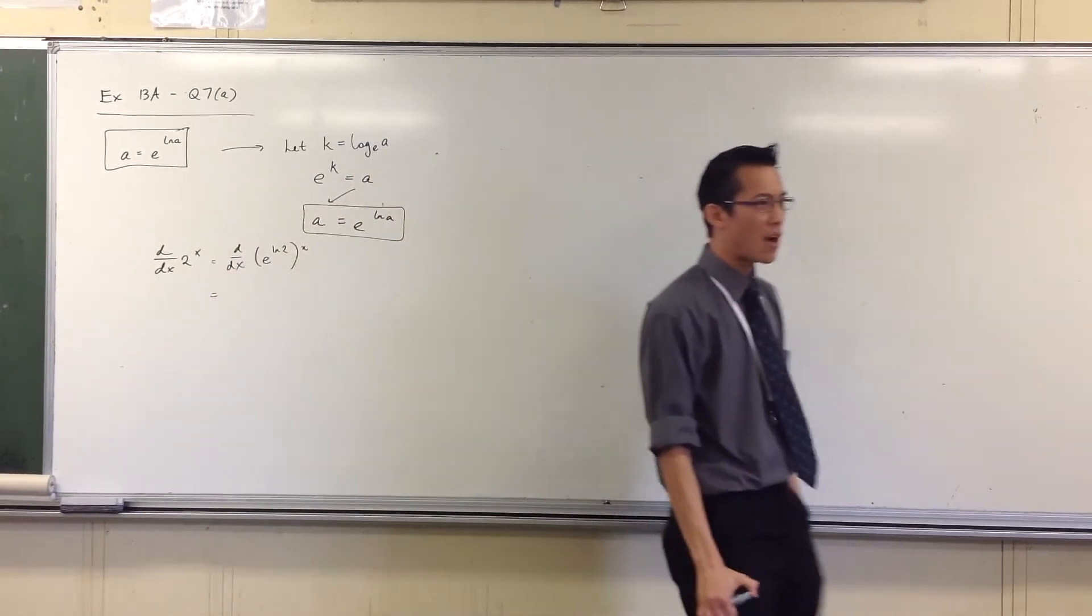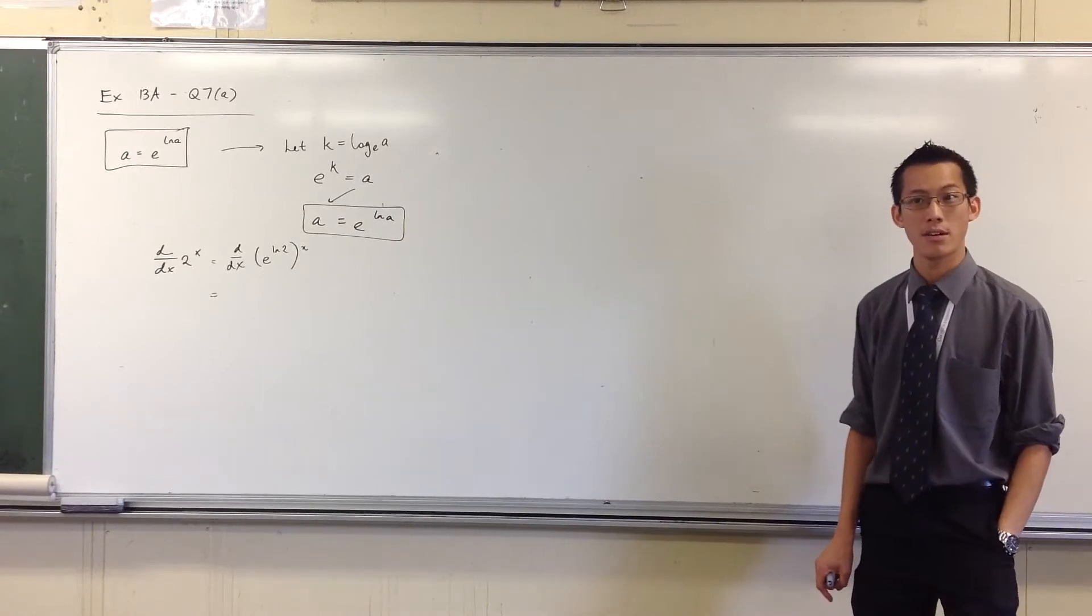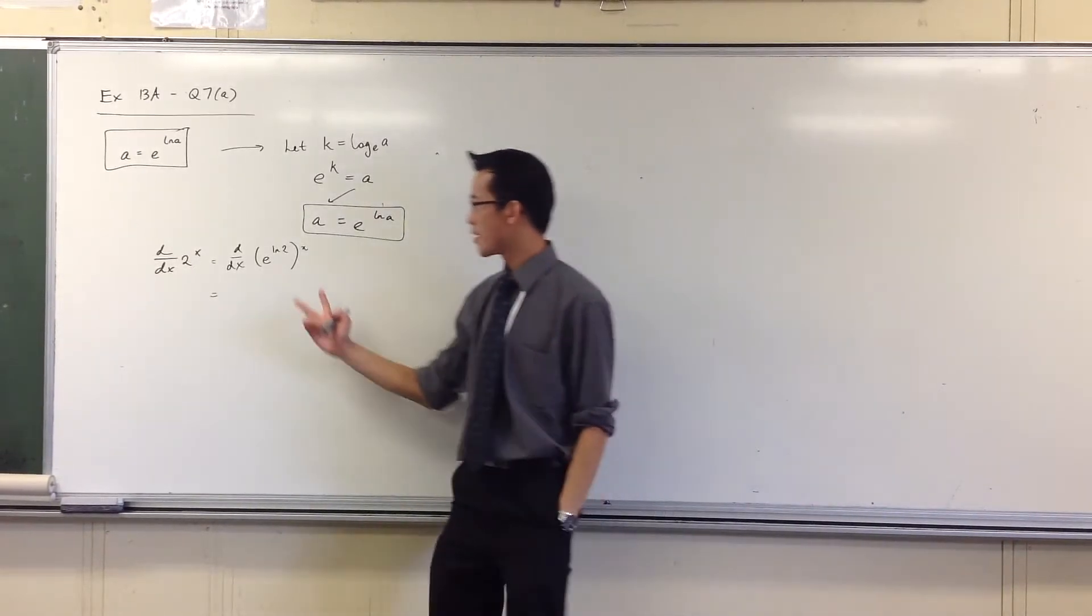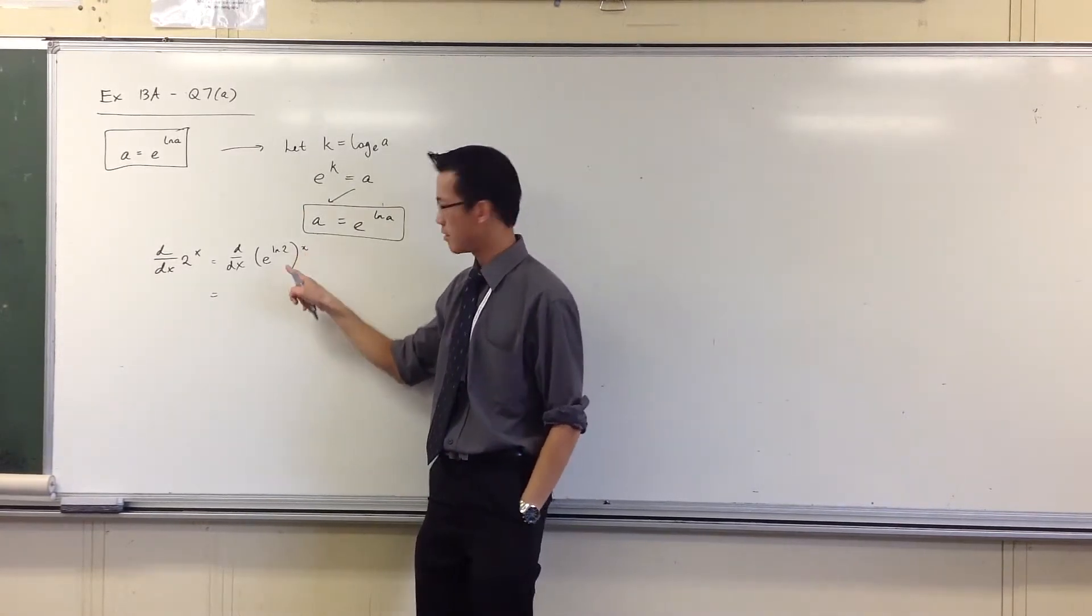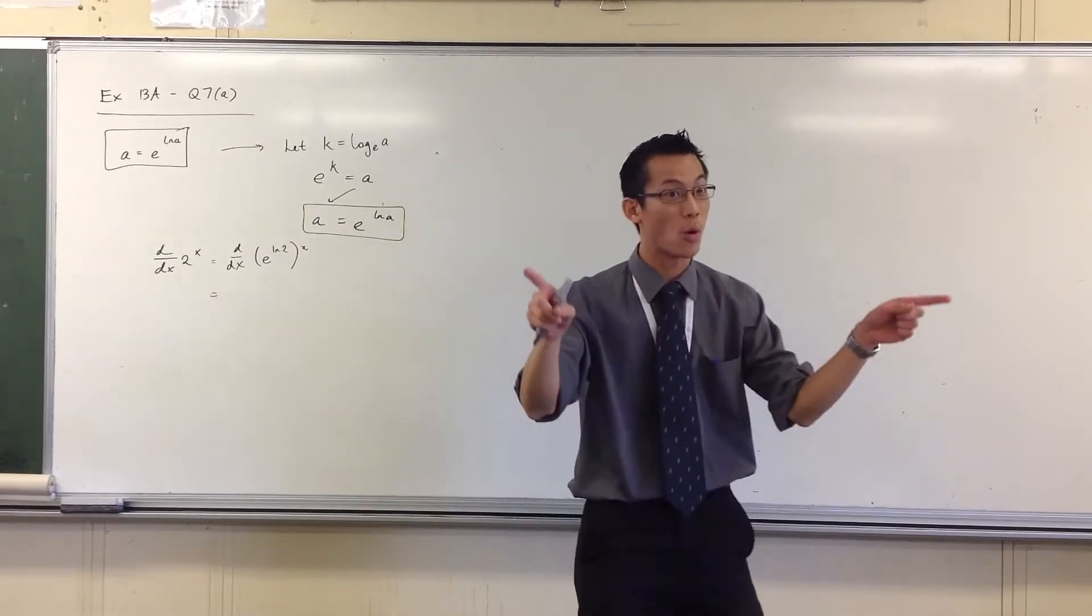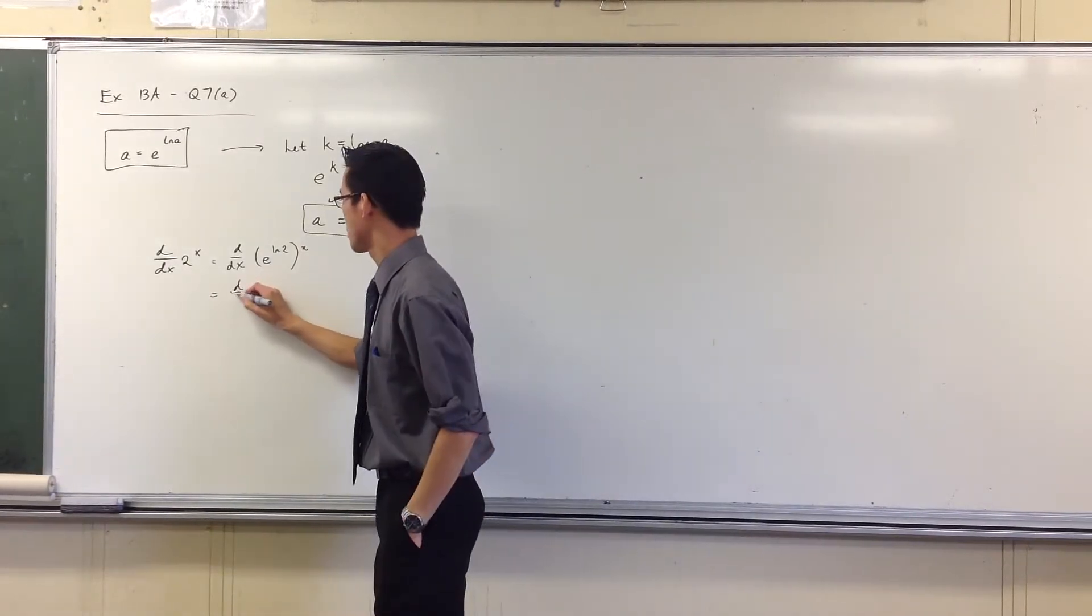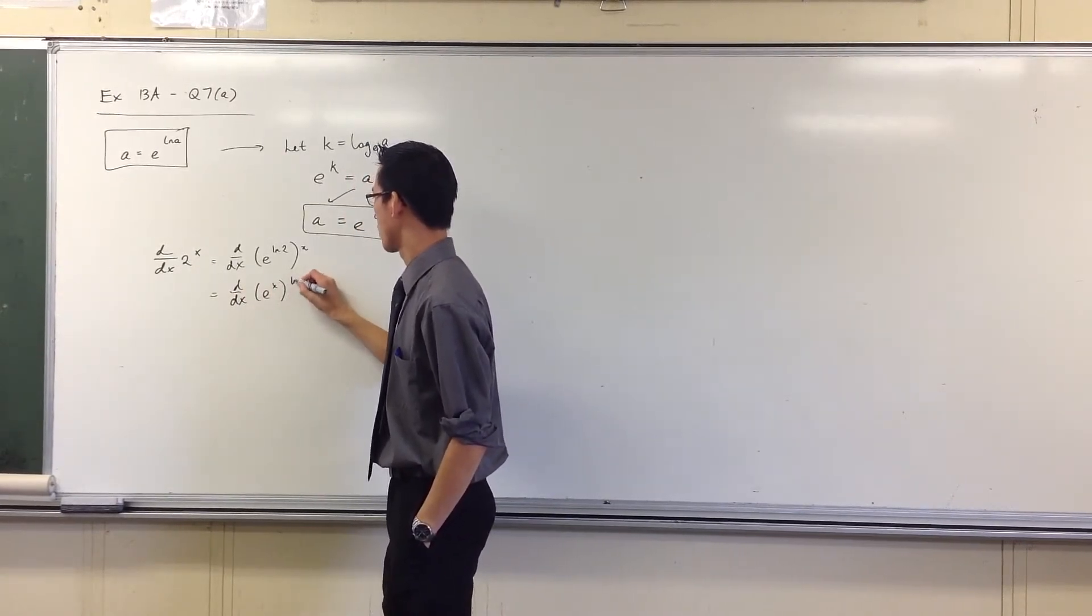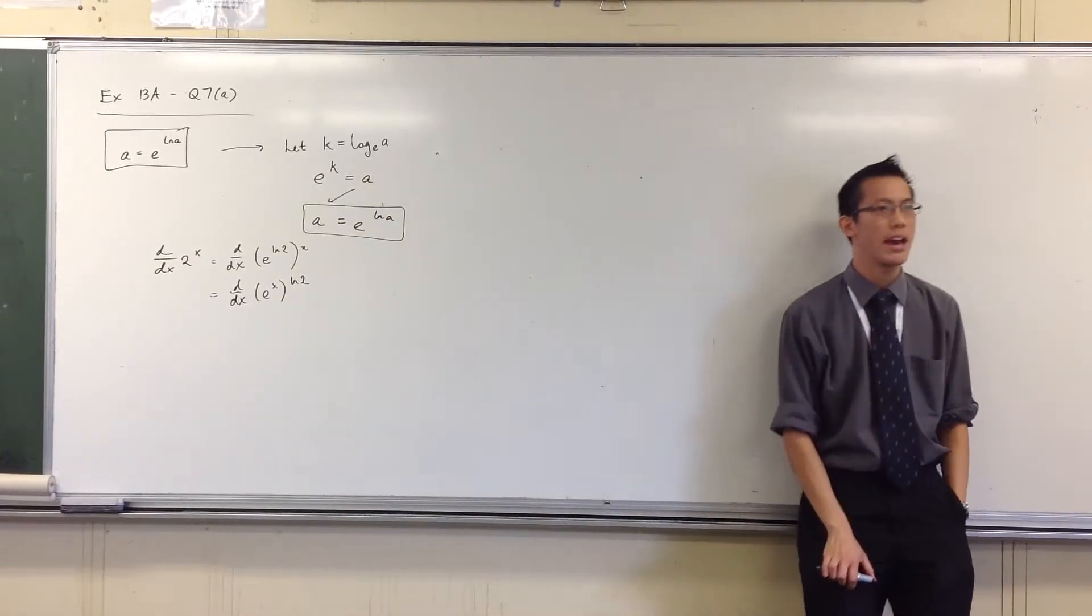Great. Now what? Think about your index laws. What can I do here that might make things a little easier for me? My two powers here, right? They're really multiplying, right? And multiplication can be done in any order. So I can swap the x and the log 2. So I can do this. Let's see, e to the x to the power of log 2.